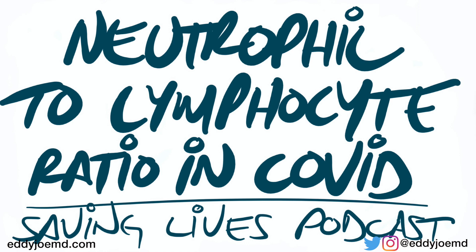If you're listening to my podcast or following my work, chances are you take care of COVID patients and we're all trying to find whatever edge we could possibly find to help us better take care of these patients. The question is: could a CBC with differential — just a regular run-of-the-mill CBC that we get on all of our patients every single day — tell us who's going to do well and who's going to do poorly if they have COVID? These authors looked at using the neutrophil to lymphocyte ratio — basically dividing absolute neutrophils over absolute lymphocytes — and proved that this could be quite helpful in identifying who's going to be critically ill.